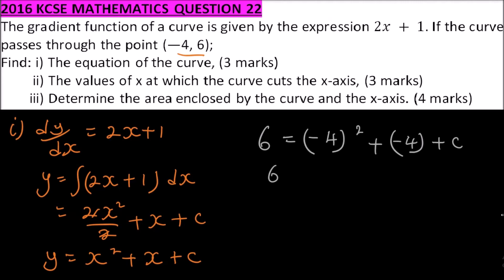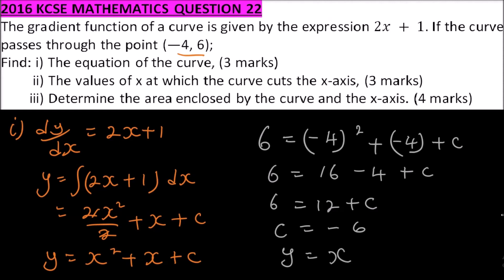This gives 6 equals 16 minus 4 plus c, implying 6 equals 12 plus c. Taking 12 to the other side, c equals minus 6. So the equation of the curve is y equals x squared plus x minus 6. That is how we work out part 1.